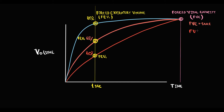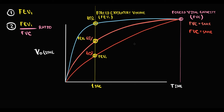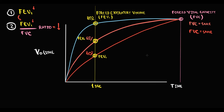So forced expiratory volume in one second is the first obstructive value that we use. As a second value to measure obstruction we use the ratio of forced expiratory volume in one second over forced vital capacity. Because forced vital capacity remains normal, if this ratio decreases it means that forced expiratory volume in one second has decreased, so there is definitely obstruction in the airways.